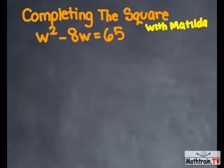To complete the square, you take the coefficient in front of w which is negative 8 and divide it by 2. So, negative 8 divided by 2 equals negative 4.